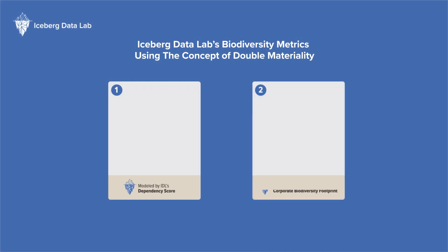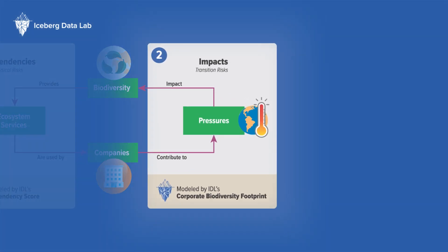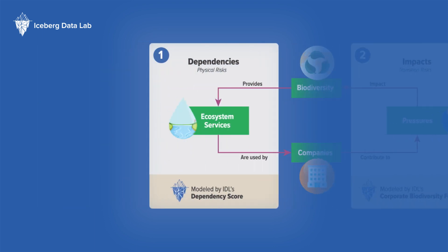This is where Iceberg Data Lab's biodiversity metrics come into play, using the concept of double materiality. We compute on the one hand the impact organizations have on biodiversity with our Corporate Biodiversity Footprint, or CBF, and on the other hand we measure to what extent these organizations are dependent on ecosystem services, measured by our dependency score.